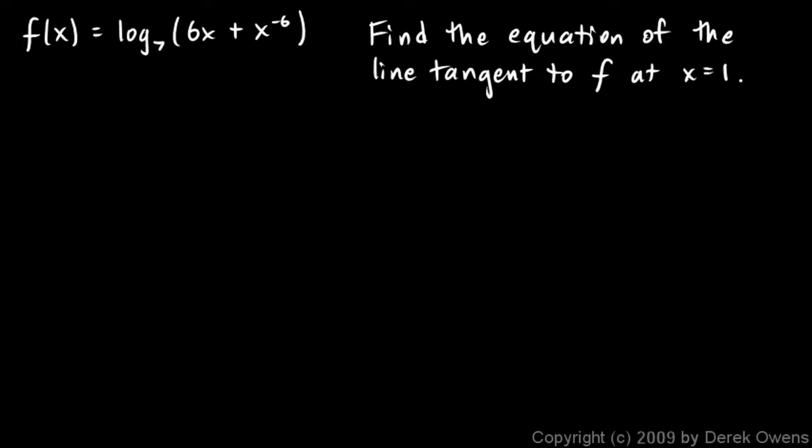So what we need to do is take the derivative of this function and then use that to find the slope at x equals 1. So we need to take the derivative of this and we'll use this principle. The derivative of a base b log is equal to 1 over x times the natural log of b.